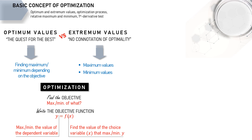Optimization is basically to find the value of this choice variable so that the maximum or minimum y can be obtained. Before learning how to find the value of the choice variable, it is worth noting the terms relative or local extremum and global extremum.